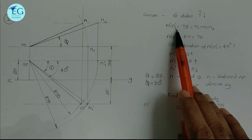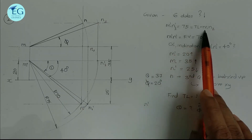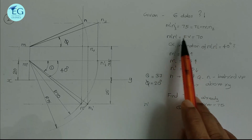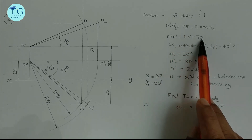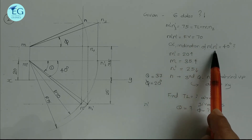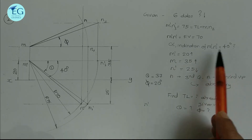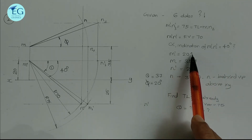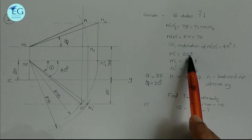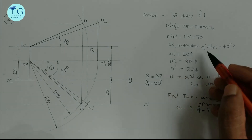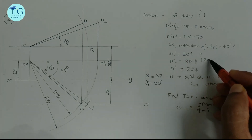Given data: True length M'N1' equals MM2 equals 75. Front view length M'N' equals 70. Alpha, inclination of M'N', equals 40 degrees. M' is 20mm above HP, that means 20mm above XY line. M is 35mm behind VP — that is, end M is in the second quadrant.